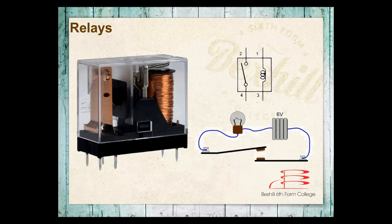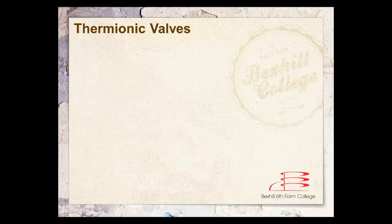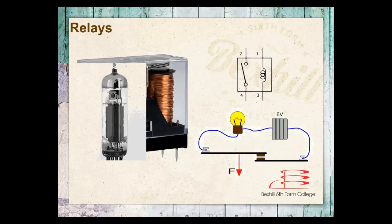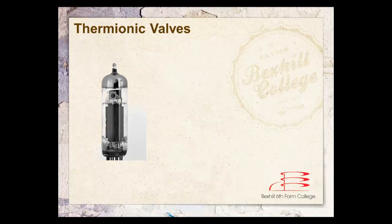The only thing with relays is that they're mechanical. Anything mechanical is actually much slower than the electricity required. So the alternative is something called a thermionic valve, or simply a valve. Using purely electricity, valves come in many different types, but you can use them for switching. Because they use electricity, they are much, much faster than relays.